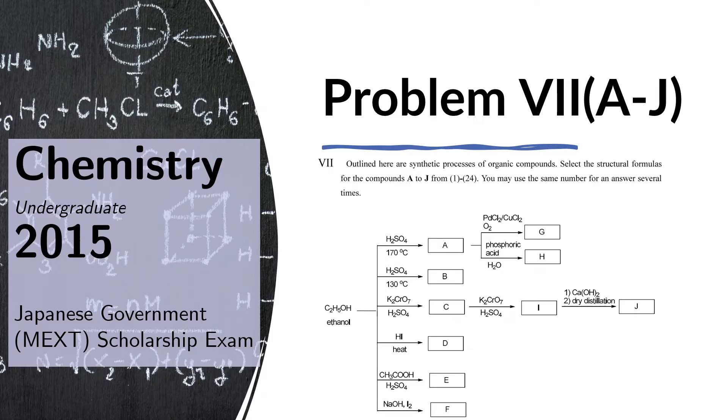Problem 7. Outlined here are synthetic processes of organic compounds. Select the structural formulas for the compounds A to J from 1 to 24. You may use the same number for an answer several times.